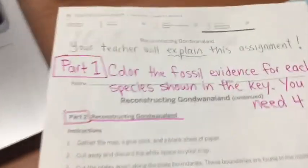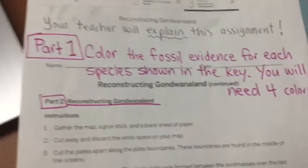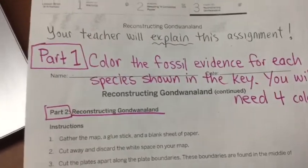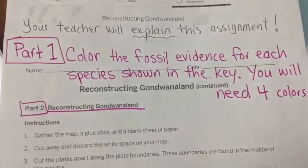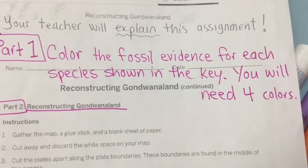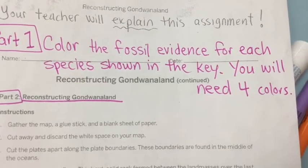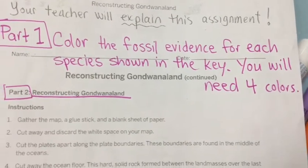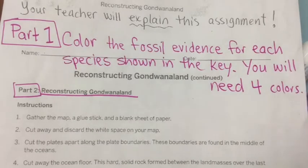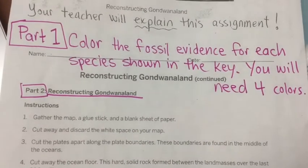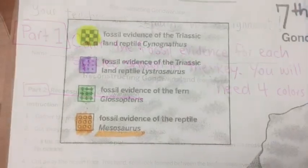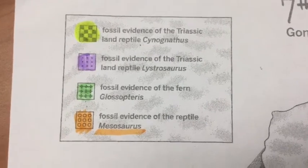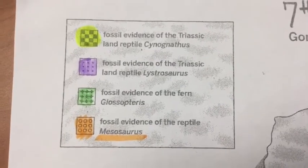You can do it right there onto the page. What I want to point out is that in part one, it tells you to color the fossil evidence for each species shown in the key. You will need four colors. So I'm going to show you that in part two. Okay, so here's part two — we have colored the four fossil evidence.